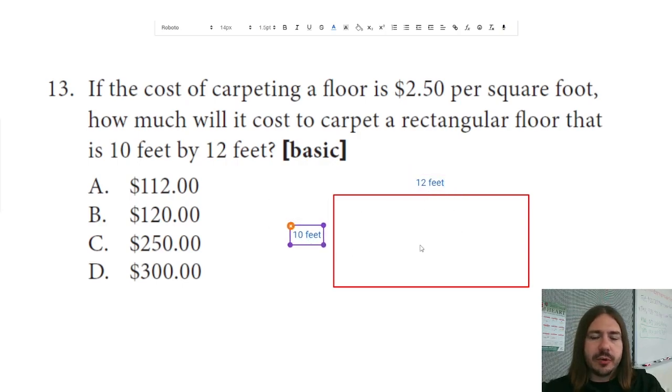Now, if I want to know the total area of this rectangular floor, to find the area of a rectangle, all you need to do is multiply the two dimensions together. So in this case, 10 times 12, which would be 120.